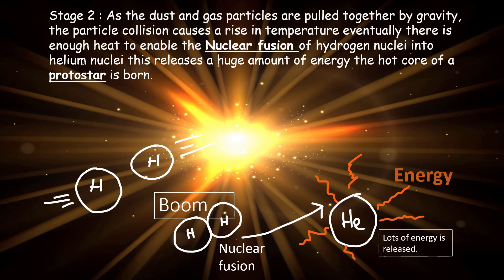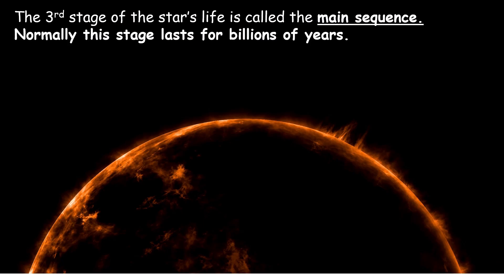Here in the second stage, the dust and gas particles from the nebula are pulled together by gravity. The particle collision causes a rise in temperature. Eventually, the heat is high enough for nuclear fusion to take place. This is where hydrogen nuclei slam together at tremendous speed to form a helium nucleus and release tremendous amounts of energy. This energy forms a hot core, and a protostar is born.